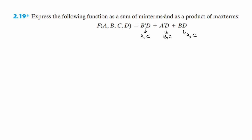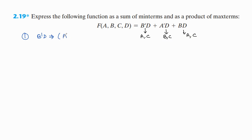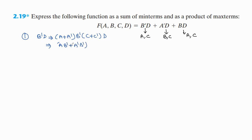We should insert these missing variables into each product term to find the sum of minterms. Taking the first product term b'd, the missing variables are a and c. We insert a by multiplying with (a + a'), since its value is 1, it doesn't change the meaning. It becomes b'd multiplied by (a + a') and (c + c'). Multiplying these terms gives ab'd and a'b'd.